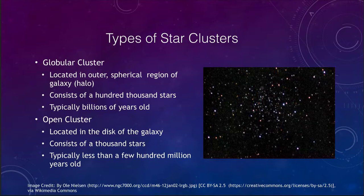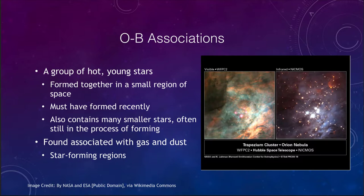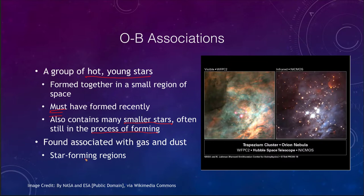Another type is the OB association, which is even younger than open clusters. These are groups of very hot, young stars that formed together recently. We know they must have formed recently because they contain stars that only live a million years or less — those stars would not still be present otherwise. OB associations also contain many lower-mass stars still in the process of forming, since more massive stars both live and form faster. These OB associations are associated with active star-forming regions.